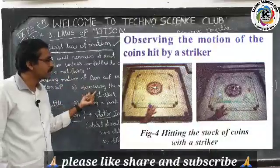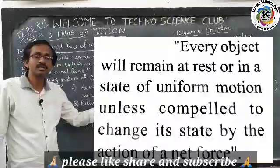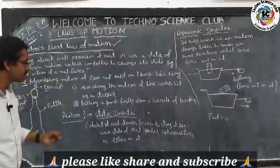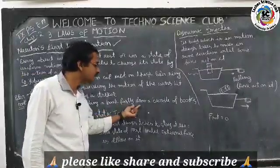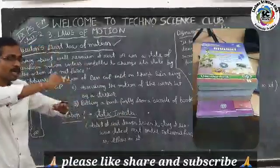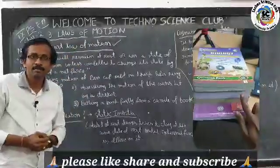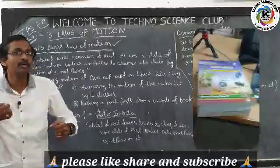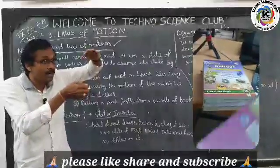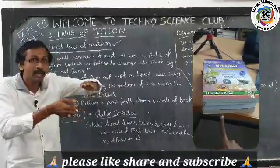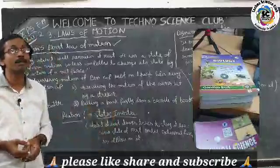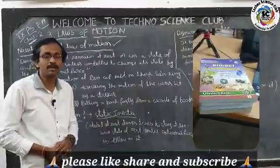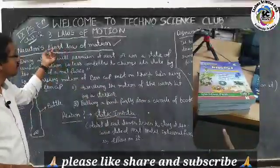Another example is pulling a book fastly from a bundle. When books are stacked one on top of another and you pull only one book out quickly with force, the remaining books stay in place because external force was applied only on that one book, not on the remaining books. So the remaining books do not fall. This is also an example for Newton's first law.